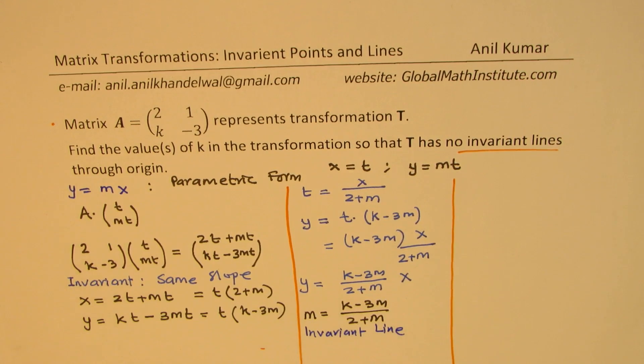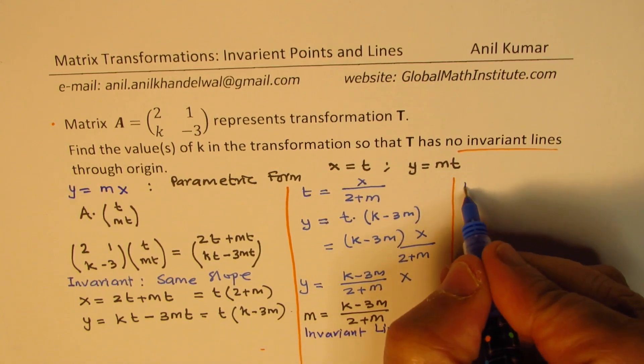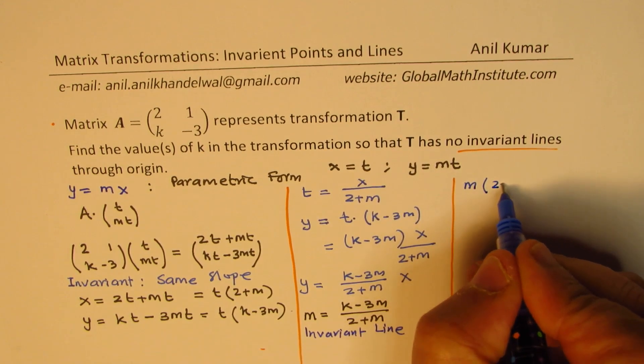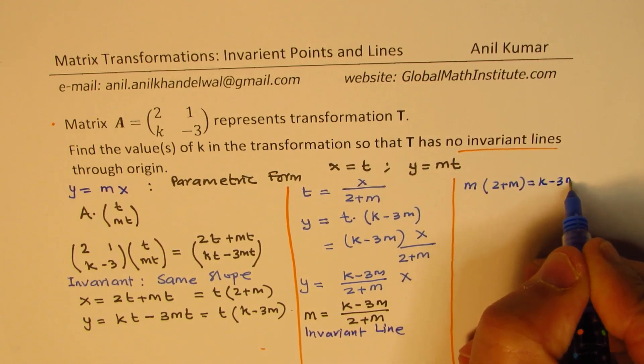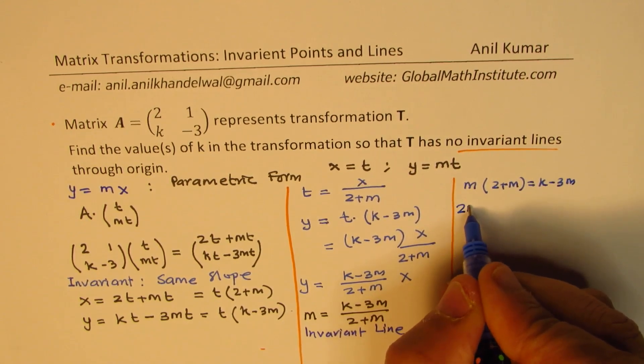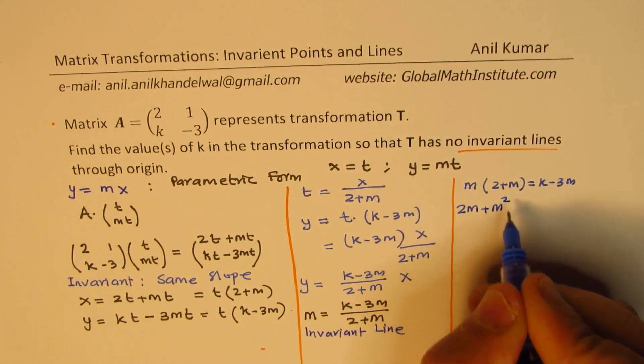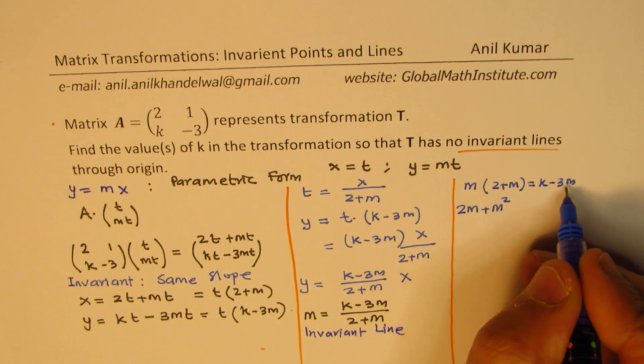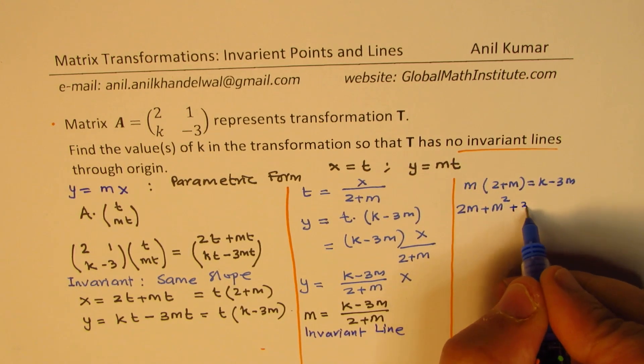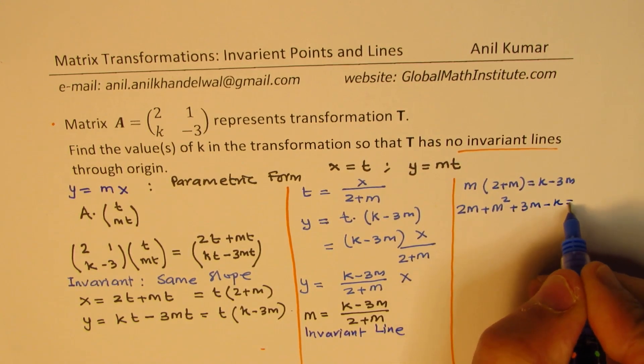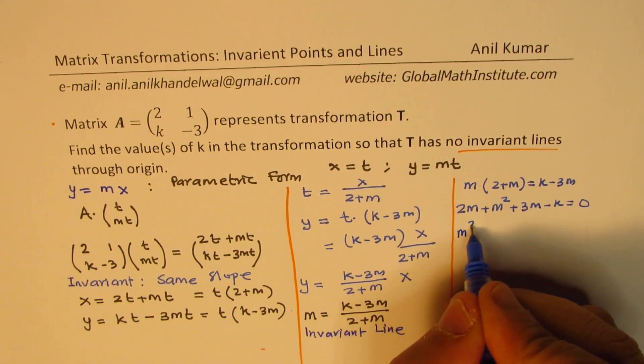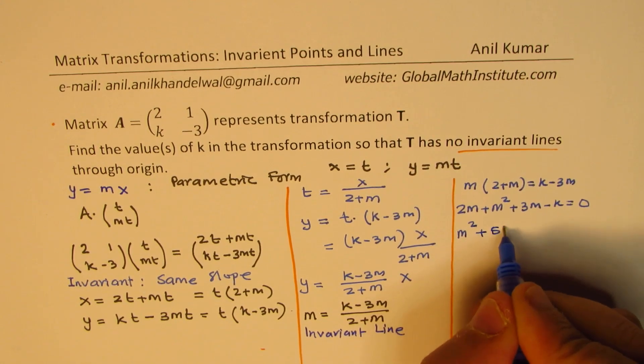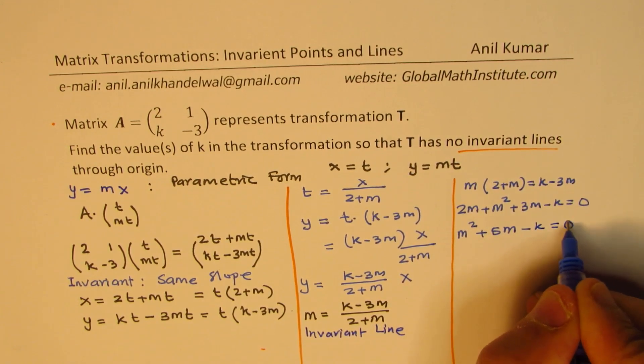Now we are going to solve this equation. Cross multiply, so we have m times 2 plus m equals k minus 3m. That is 2m plus m square. Bringing k to this side and 3m also, we get plus 3m minus k equals 0. So which gives us m square plus 5m minus k equals 0.